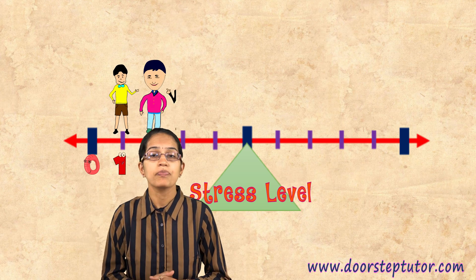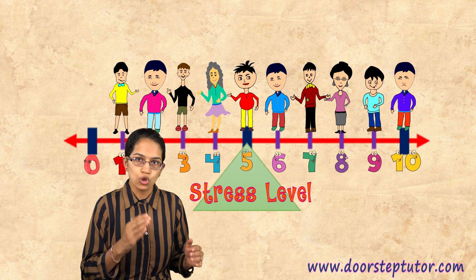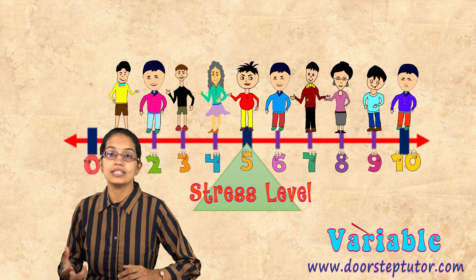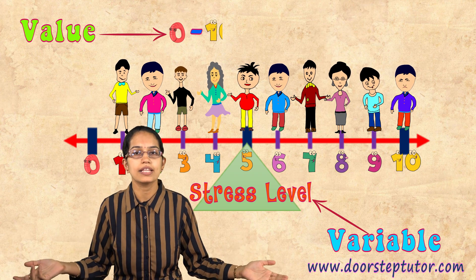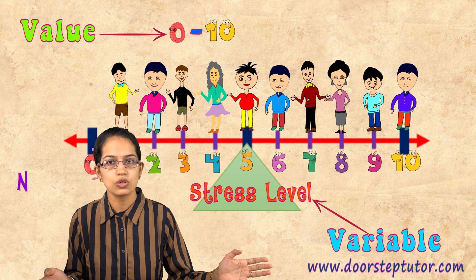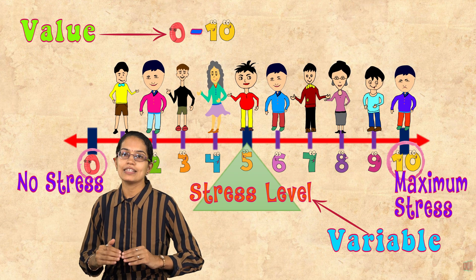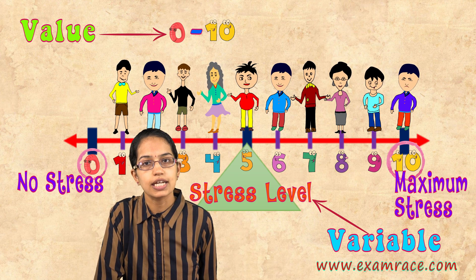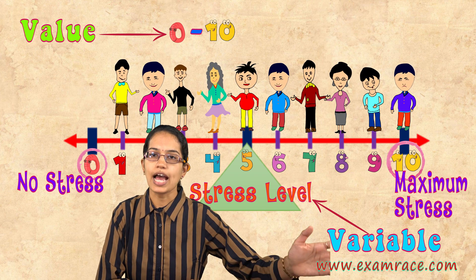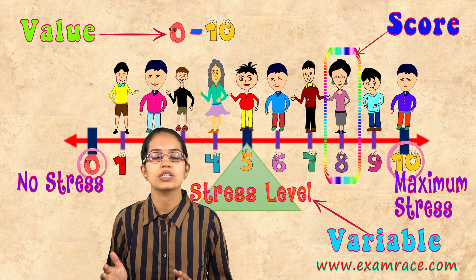Another example: children with stress levels. There are 10 children, each having a different stress level. The variable here is the level of stress. Values range from 0, which is no stress, to 10, which is maximum stress. If I want to calculate the stress value for a particular child — let's say that child's stress level is 8 — that becomes my score.